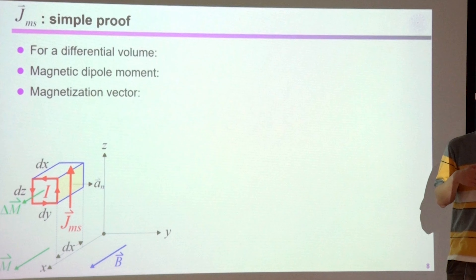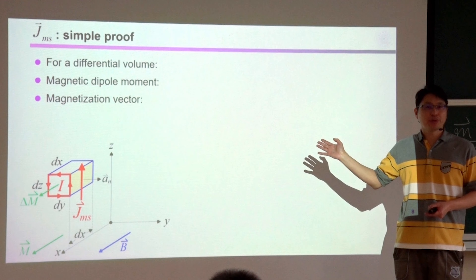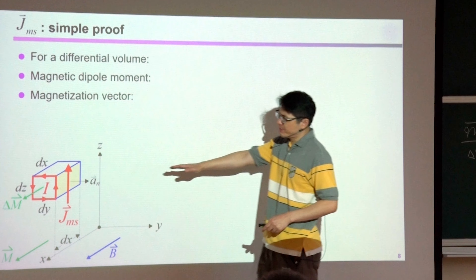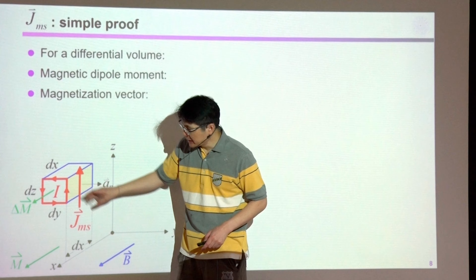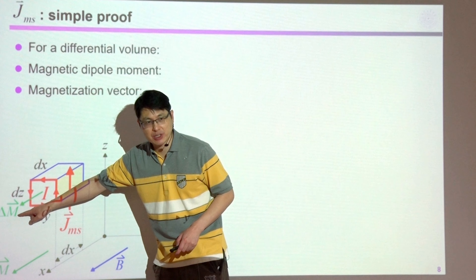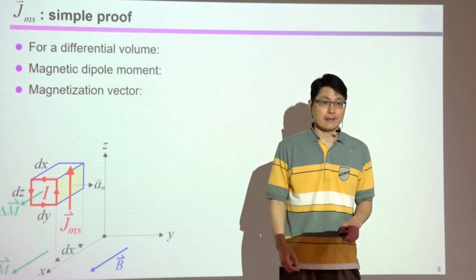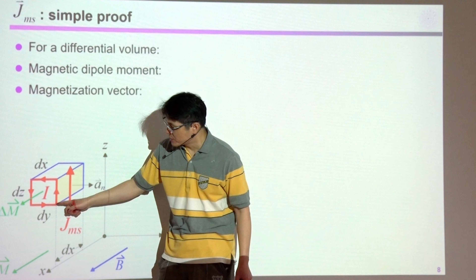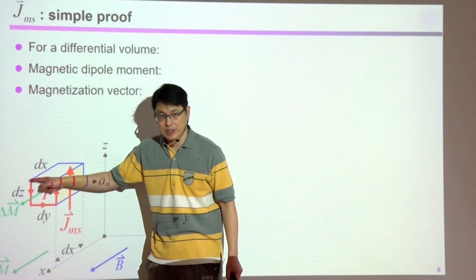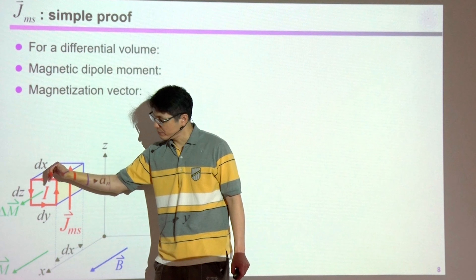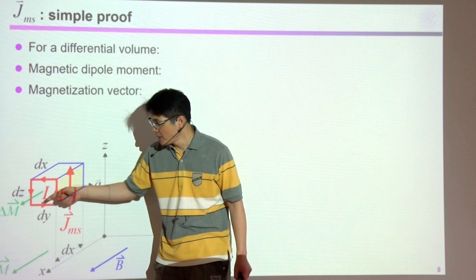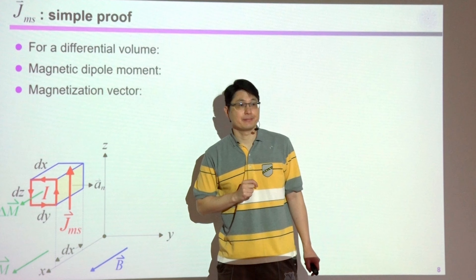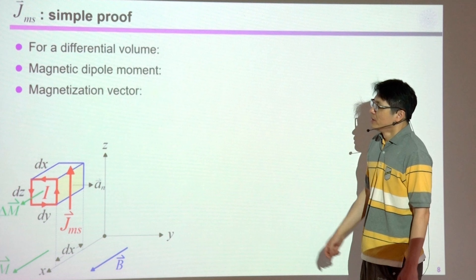Of course, that is only a qualitative proof, so now we want to perform a more rigorous, more quantitative analysis. Let me give you a very small volume, and inside this volume we have a non-vanishing magnetization vector. In this small volume I have lots and lots of magnetic dipoles, and here I assumed I have current flowing in the counterclockwise direction. If I have a counterclockwise flowing current, I produce a magnetization vector pointing in the x direction. I'm using Cartesian coordinates x, y, and z.